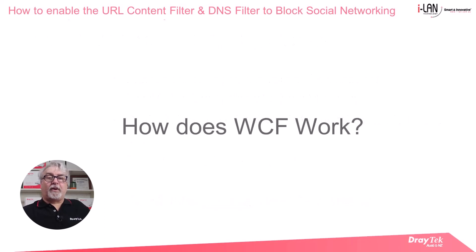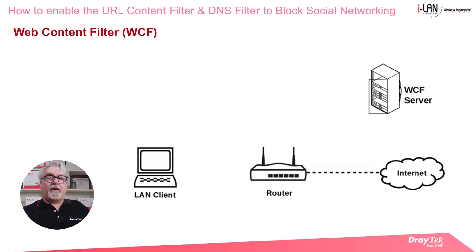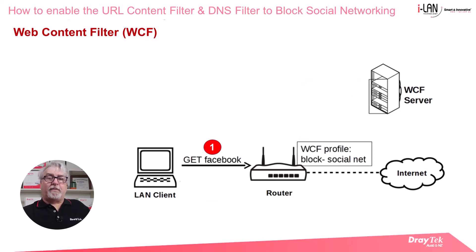Let's quickly have a look at the mechanism used by Draytek routers when the web content filter is being used. First, the router receives an HTTP request from a LAN client. Then the WCF engine built into the router checks its local cache for URL values. Typically more than 99% of queries are locally resolved by the cache.